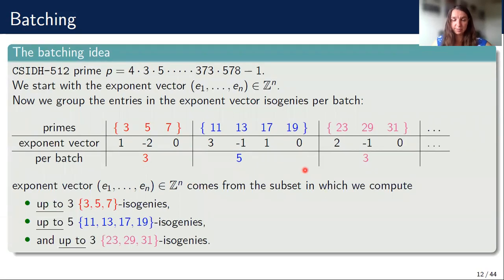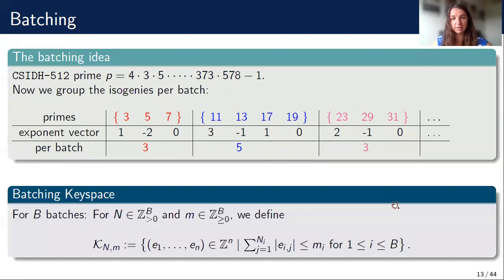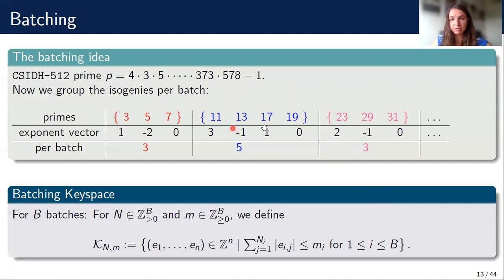To get a larger key space, we also note that this same exponent vector is in the subset where we compute up to three isogenies in this batch, up to five isogenies in this batch, and so on. This is our resulting new key space. It's not at all clear how this speeds up any of the computation, but the second contribution of CTIDE is that we also change the algorithm to compute the group action evaluation in a way that we can really evaluate the group action for any prime in the batch efficiently.